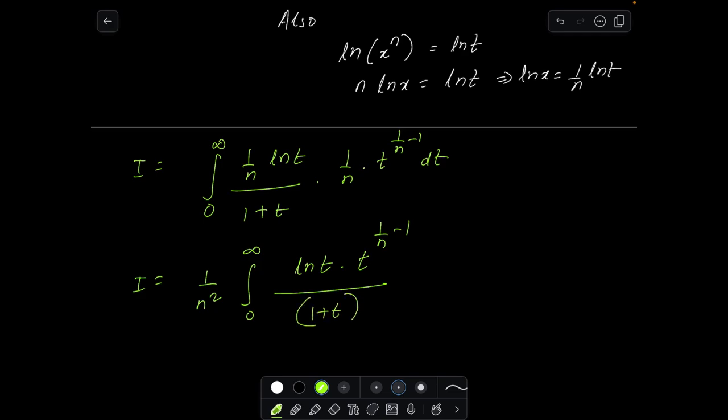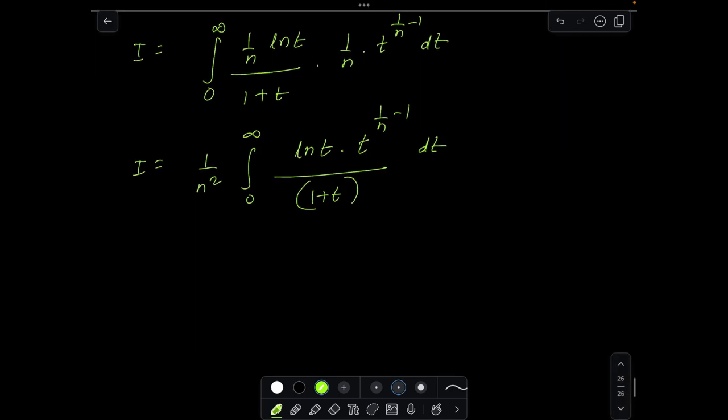Now this is a place where everybody will be stuck—they don't know how to proceed any further from here—but let me help you out. Let us recall our beta function. So beta x y, one of the several definitions of beta function says it can be expressed as 0 to infinity t to the power x minus 1 by 1 plus t to the power x plus y dt.